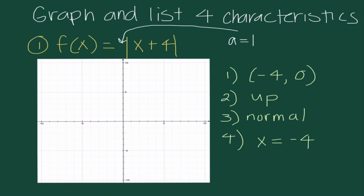When graphing this, I begin at negative 4, 0 and place a point. Since it opens up and is normal, I go up 1 and over 1 in both directions to draw the V. Finally, I sketch the line of symmetry as a dashed line, because these are not solutions, but it shows that if I fold on this line, the two sides are symmetric to one another.